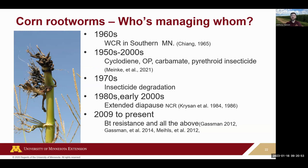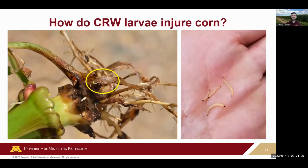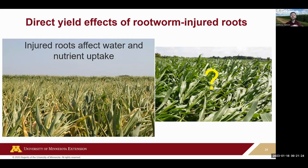Bruce has a history here of western corn rootworm — especially in southern Minnesota. Through the 1950s–2000s we had a few different insecticide options, but those have been narrowing. In the 1980s and early 2000s we saw extended diapause for northern corn rootworm. Around 2009 to present, we've been seeing BT resistance — BT traits were introduced in the mid-90s and it took some time, but we were seeing that BT resistance breaking down. Going forward, we're wondering what might happen with our traits and what other options remain.